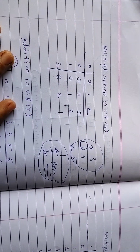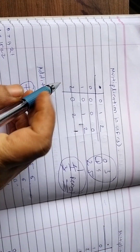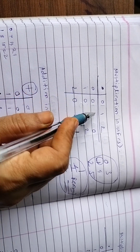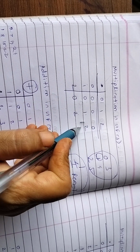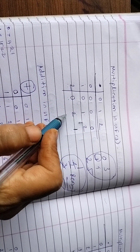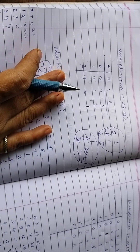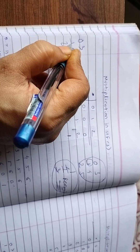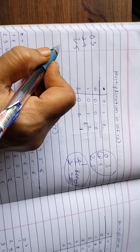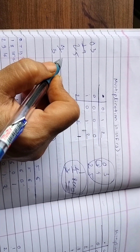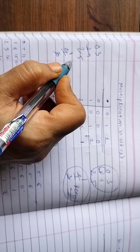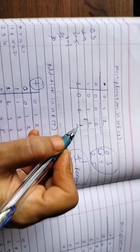Now multiplication in GF(3): 0×0=0, 0×1=0, 0×2=0, 1×0=0, 1×1=1, 1×2=2, 2×0=0, 2×1=2, 2×2=4. For 4: using the replacement table, write 0, 1, 2, 3, 4, 5 — 4 means 1. Or using the mod method: 4 divided by 3 gives quotient 1 and remainder 1. So 2×2=1 in GF(3).